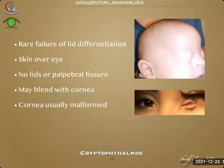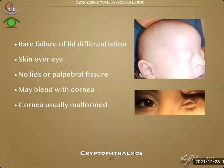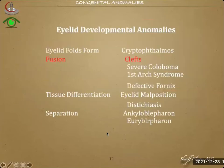We start with cryptophthalmos. It is a rare failure of lid differentiation where the skin is completely over the eye — no lids or palpebral fissure. The skin may blend with the cornea, and the cornea is usually malformed in this condition. By the sequencing theory, tissue forms by induction of the fully formed tissue that preceded it. Therefore, failure of eyelid formation may lead to failure of formation of the cornea and absence of the eye itself. In this condition, we perform ultrasonography to see what is inside for further management.